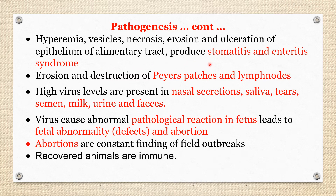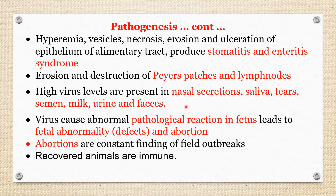There is erosion and destruction of Peyer's patches and lymph nodes, as the virus has affinity for lymphoid cells. The virus is present at high levels in nasal secretions, saliva, tears, semen, milk, urine, and faeces — all secretions and excretions contain virus. The virus causes abnormal pathological reactions in the fetus, leading to fetal defects and abortion.